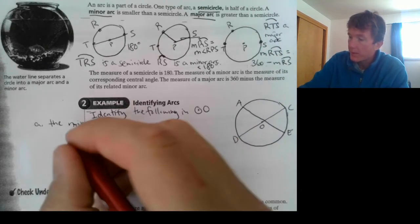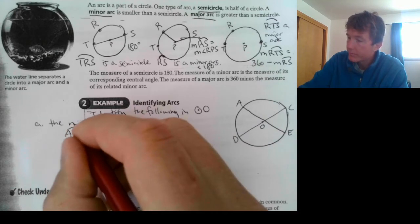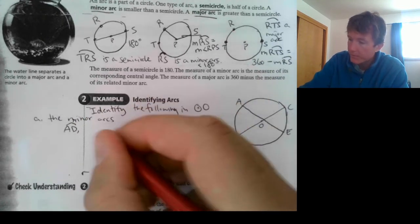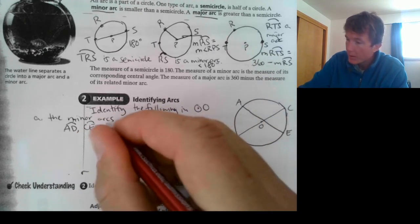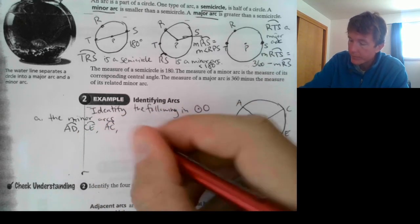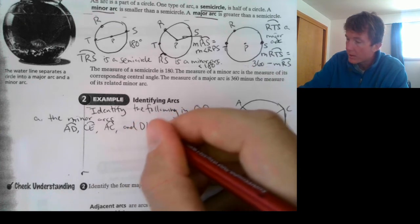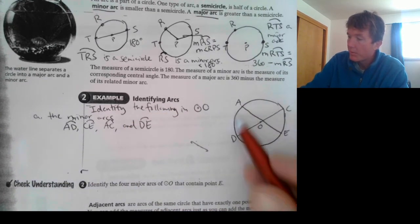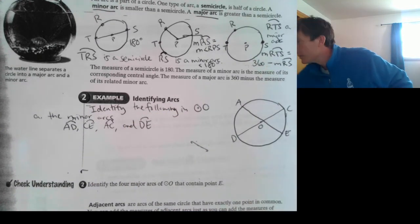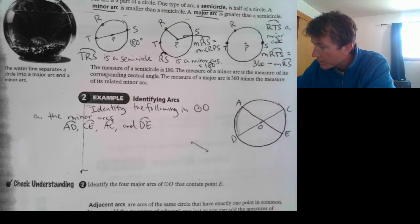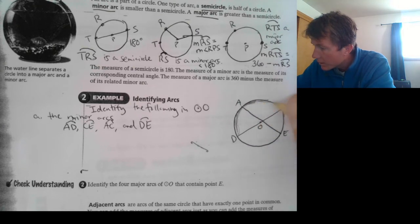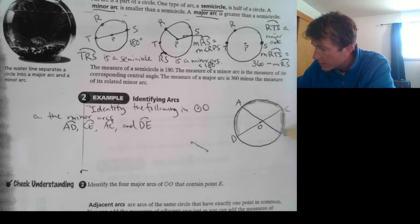So, let's list these all. We have AD. AD is one of them. CE. AC. And DE. Boom. Let's see if I can shade these. Make it a little more apparent. Boom. That's a minor arc. AC is a minor. CE is a minor arc. And DE is also a minor arc.